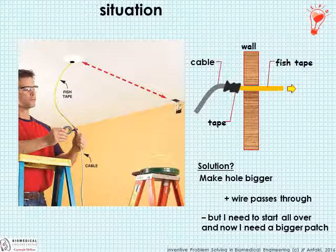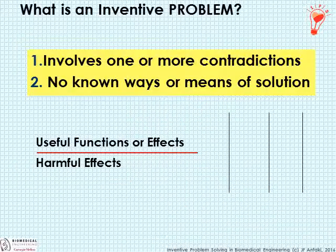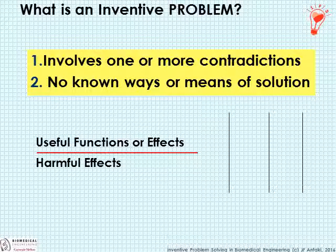What would you do in this situation? Let's come back to that later. What we have here is known as an inventive problem — it fulfills two conditions. First, it involves one or more contradictions. And secondly, there is no known means of solution, no obvious solution.